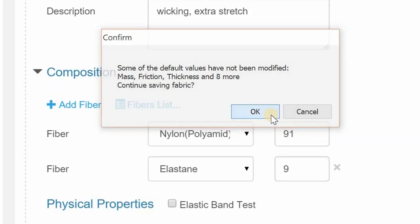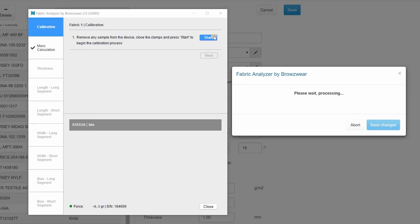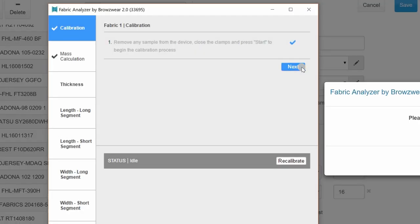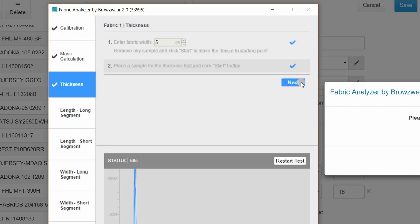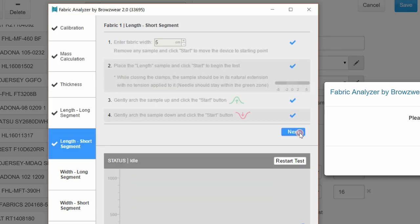Once the General Information and Composition sections are completed, you can begin FAB Calibration. Click the Use FAB button and a window will pop up to guide you through the steps you'll need to complete a test. Each time a test phase is successfully completed, the next test will be highlighted in the sequence.